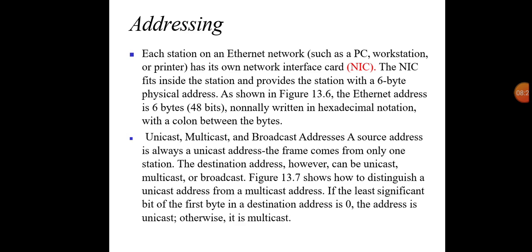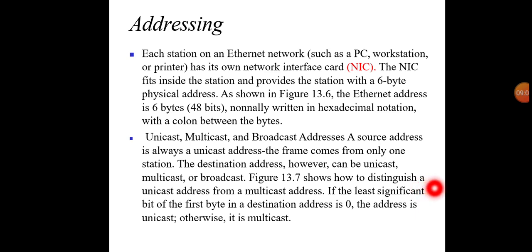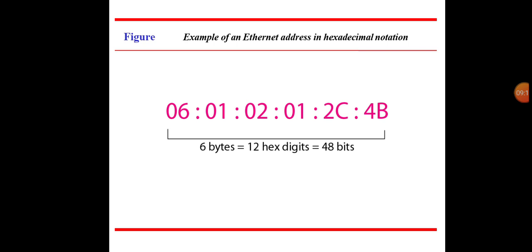Addressing: Each station on an Ethernet network — such as a PC, workstation, or printer — has its own Network Interface Card (NIC). The NIC fits inside the station and provides it with a 6-byte physical address. A source address is always a unicast address since frames come from only one station. The destination address, however, can be unicast, multicast, or broadcast. If the least significant bit of the first byte in a destination address is 0, the address is unicast; otherwise it is multicast.